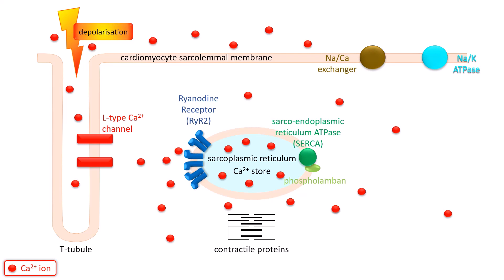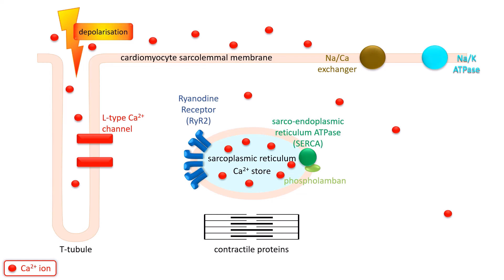Calcium levels in the cytoplasm must be rapidly restored to baseline between contractions. The main mechanism to remove calcium from the cytoplasm is the sarcoendoplasmic reticulum pump, or SERCA. It pumps calcium against the concentration gradient back into the sarcoplasmic reticulum, allowing the cell to relax and replenishing the store until the next action potential arrives.